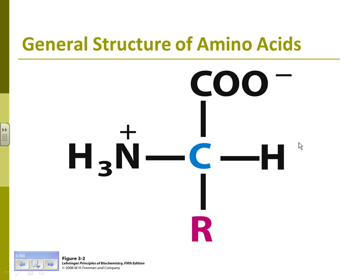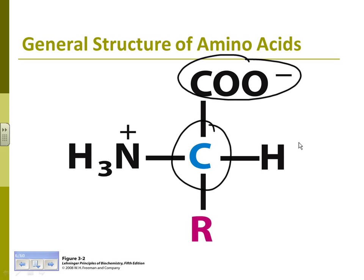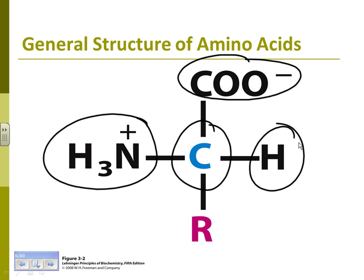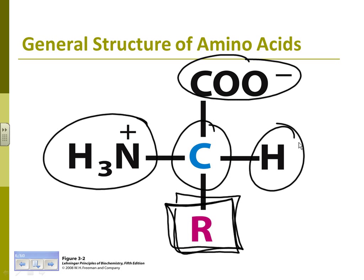All amino acids basically look the same: there's one central carbon, a carboxyl group, an amino group, and a hydrogen — that's the same for all of them. The only thing that makes them different is the R group. The R group is what puts them into different families.